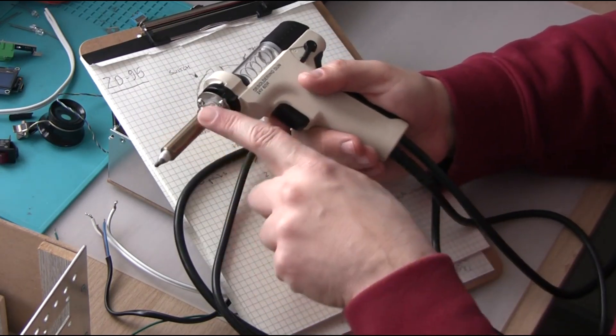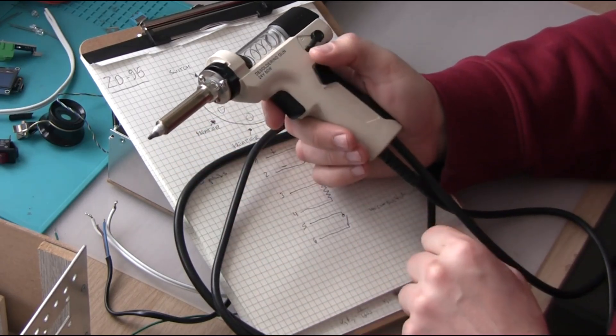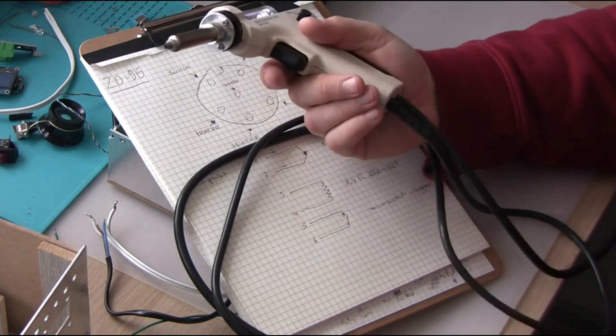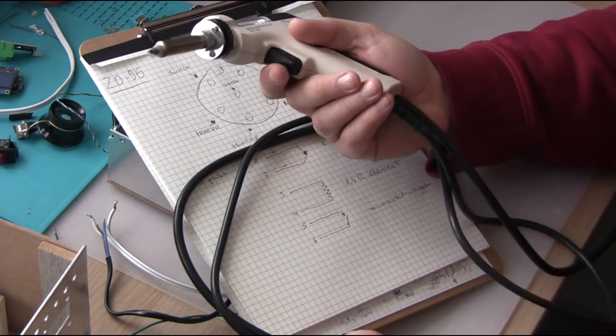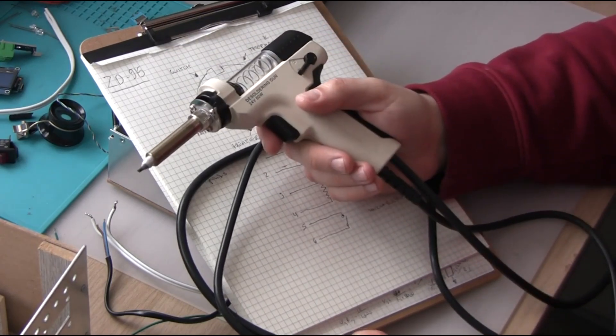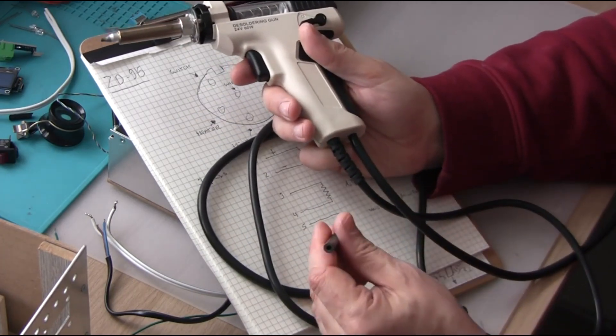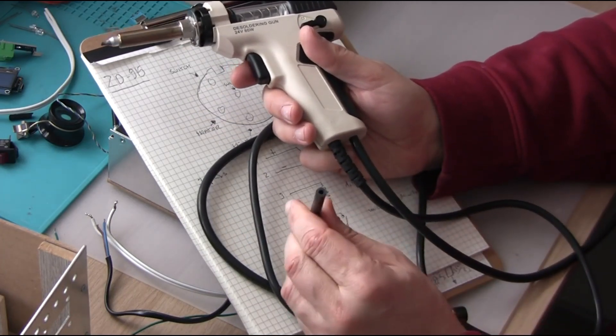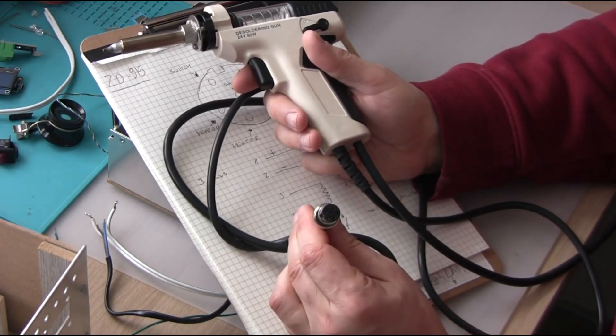The principle is there's a heating element here, and then a suction pump is triggered by pushing here on the trigger. From the gun there is a tube where you need to connect a vacuum pump and there is an electrical socket.